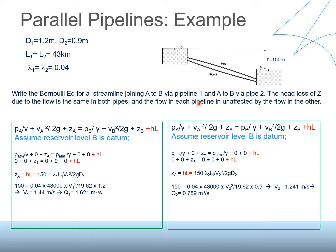Now let's look at the second example where the pipelines are in parallel. In the previous example the pipelines were in series; here they are parallel. Pipe dimensions are given: d1 = 1.2 m, d2 = 0.9 m, length of both pipes is 43 km, and friction factor is 0.04 for both. Unlike the series case, the discharges through each pipe are different here.